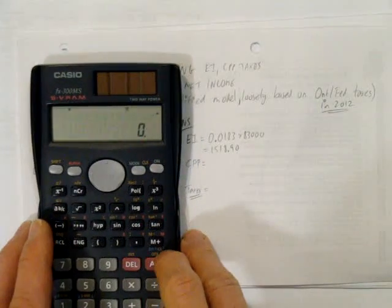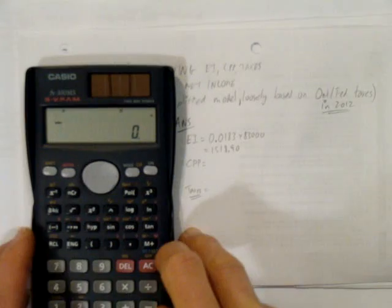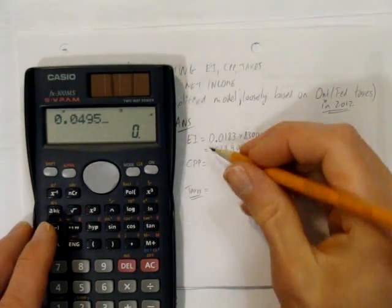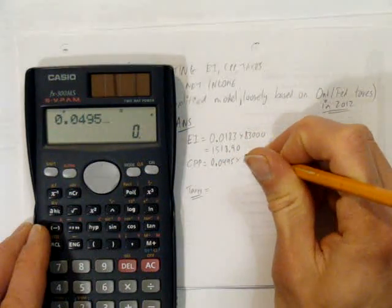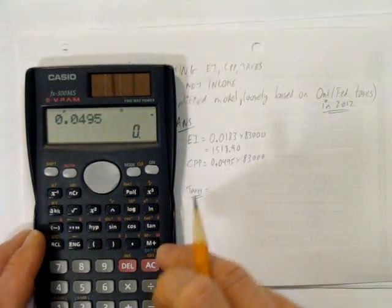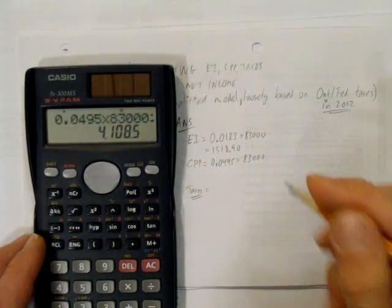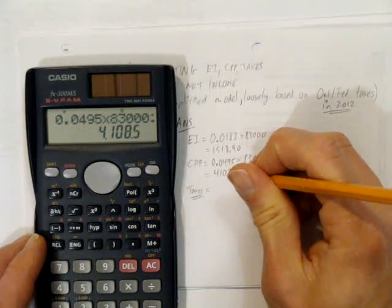Let's do the same thing with CPP. If you remember, CPP was 4.95%. So, I'll calculate 0.0495, that's just 4.95% as a decimal, times what they make, making sure to show my work as I type it into the calculator. And I get $4,108.50.